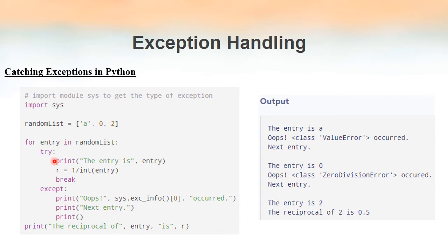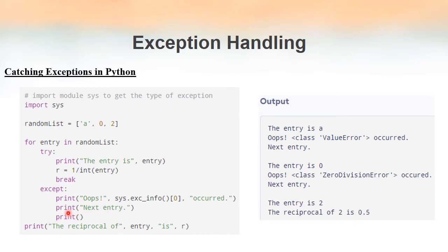Inside the for loop we have the try and except clause. Inside the try clause we print the entry and then compute r = 1 / int(entry). We cannot divide an integer by a character, and we can only divide by integers other than zero. We also have a break statement in the try block, followed by the except clause. Inside the except clause we have three print statements: the details of the exception raised, the message 'next entry', and an empty line. Outside the loop we print the reciprocal of entry.